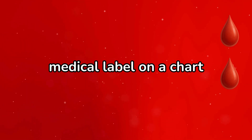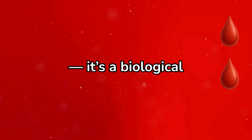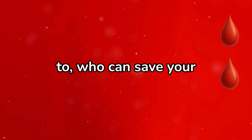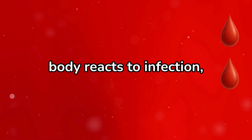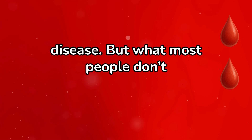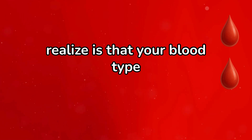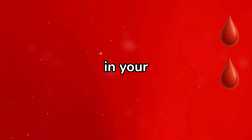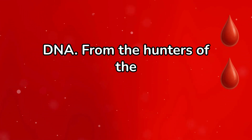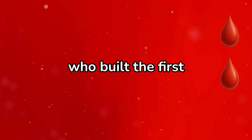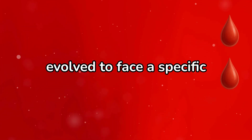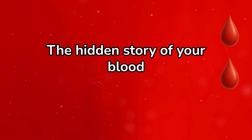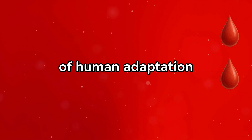Your blood type isn't just a medical label on a chart — it's a biological signature written in the language of evolution. It determines who you can safely donate to, who can save your life, and even how your body reacts to infection, diet, and disease. But what most people don't realize is that your blood type also carries invisible advantages, traces of ancient survival strategies embedded in your DNA. From the hunters of the Paleolithic world to the farmers who built the first civilizations, each blood type evolved to face a specific set of environmental and microbial challenges. The hidden story of your blood type is the story of human adaptation itself.